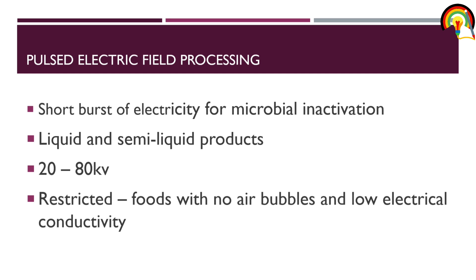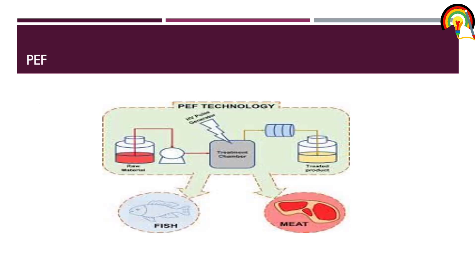Pulsed electric field processing uses short bursts of electricity for microbial inactivation. It is suitable only for liquid and semi-liquid products. It has a high voltage pulse in the order of 20 to 80 kilovolts. Foods with air bubbles and foods with low electrical conductivity are restricted from pulsed electric field processing. In the schematic, raw material enters a treatment chamber and the treated product comes out.